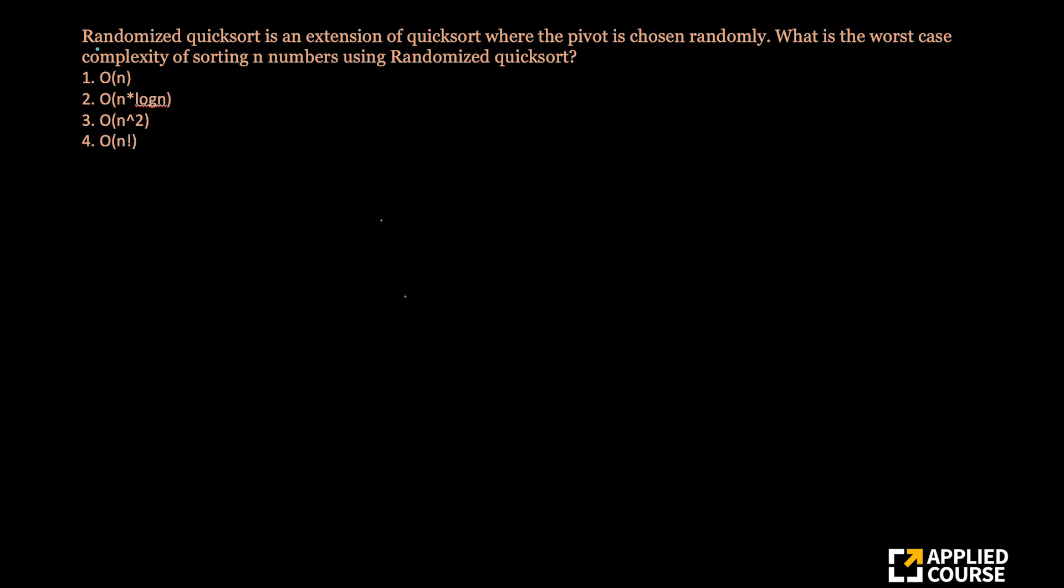So let's take this problem. Randomized quicksort is an extension to quicksort where the pivot is chosen randomly. What is the worst case? Remember, what is the worst case complexity of sorting n numbers using randomized quicksort?